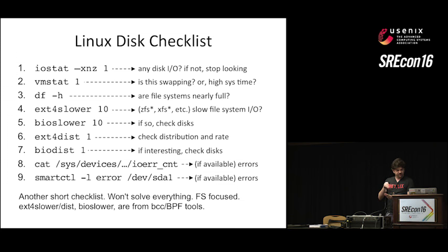Code cache happens after GC — GC runs in parallel really quickly, then code cache blocks the world for 500 milliseconds as it does cleanup. How would you determine that in a hurry? The CPU checklist includes: uptime, vmstat, mpstat to look at CPU balance, pidstat per CPU, flame graphs for CPU profiling, and the sub-second offset heat map. Flame graphs are just a great visualization for profiling and understanding what's going on — I've used these during a Netflix incident because we've automated them in our tool so we can bring them up in a hurry.